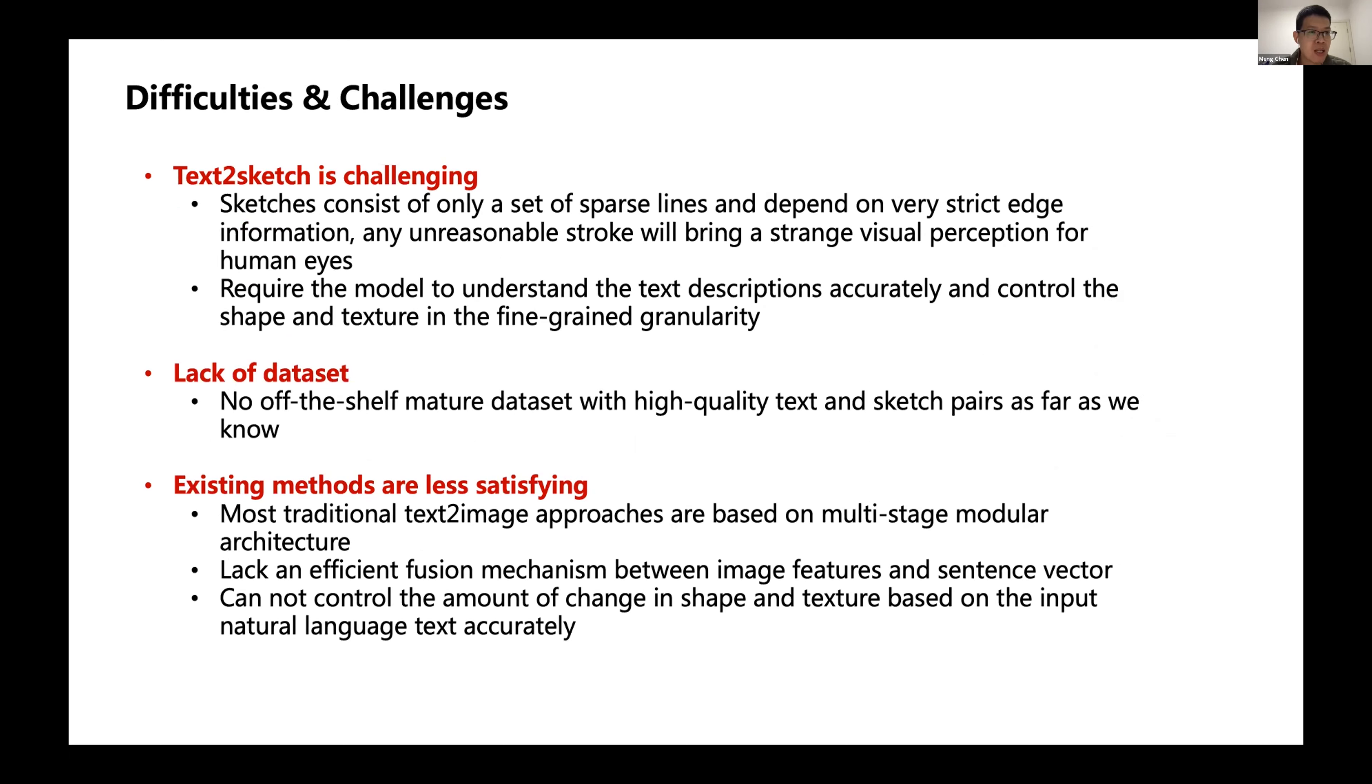There are several difficulties and challenges. First, text-to-sketch is very difficult because sketches consist of only a set of sparse lines and depend on very strict edge information. If the model makes any unreasonable mistakes, it will bring a very strange visual perception to the human eye. It requires the model to understand text descriptions accurately and control the shape and texture at fine-grained granularity. We also face the lack of datasets, as there is no official mutual dataset with high-quality text and sketch pairs as far as we know.